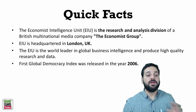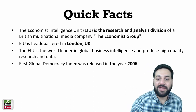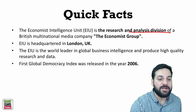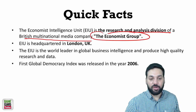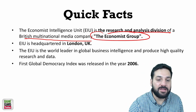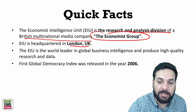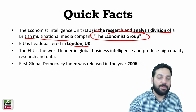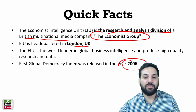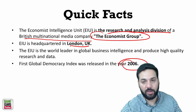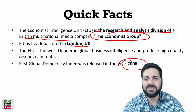Quick facts: The EIU is a research and analysis division of a British multinational media company, the Economist Group. Its headquarter is in London, UK. EIU is a world leader in global business intelligence and produces high-quality research and data. This index was first released in 2006.